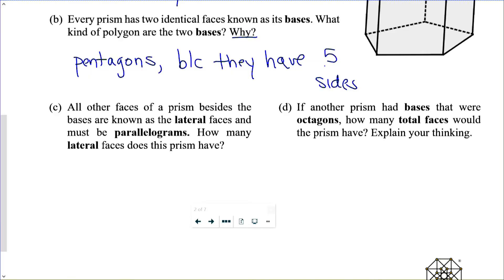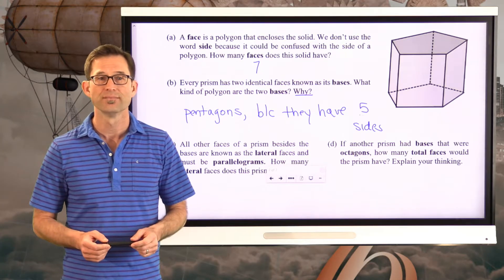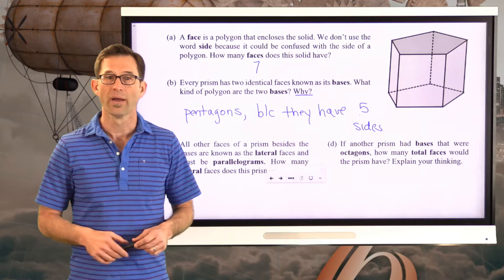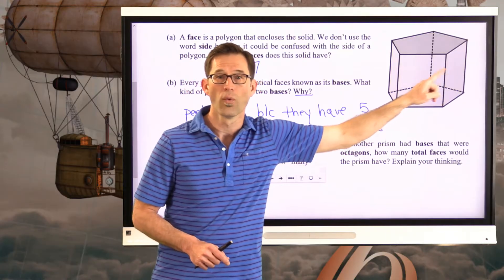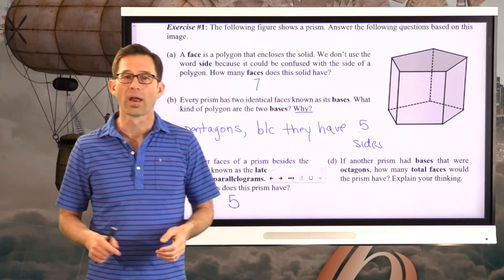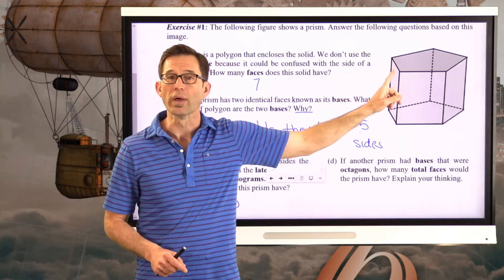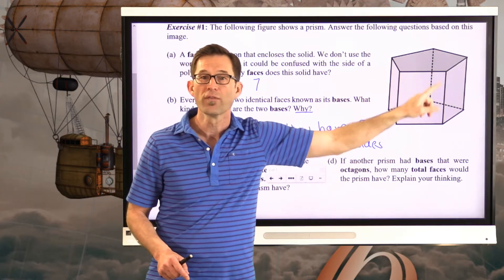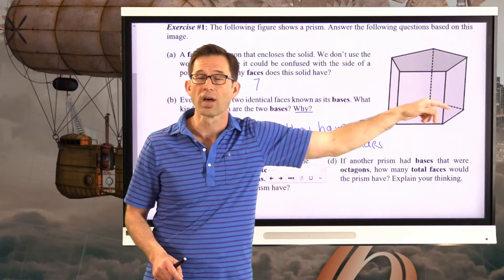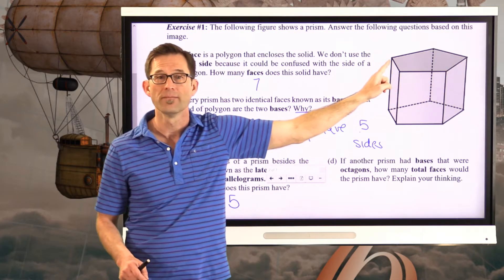Letter C: all the other faces of a prism besides the bases are known as the lateral faces and must be parallelograms. How many lateral faces does this prism have? Counting them up: one, two, three, four, five — it has five lateral faces. The reason it has five is because the bases are pentagons with five sides each. We're connecting all the vertex points of one base to the vertex points of the other, leaving us with five lateral faces — one for each side of the pentagon.